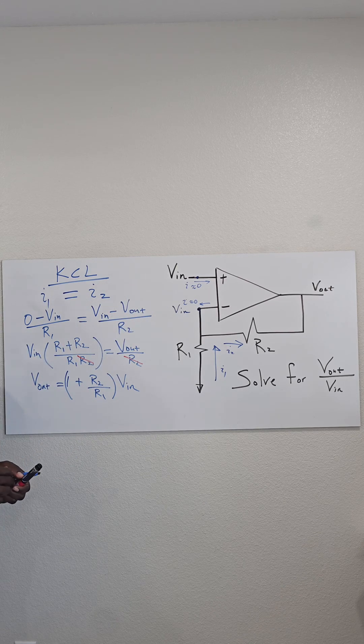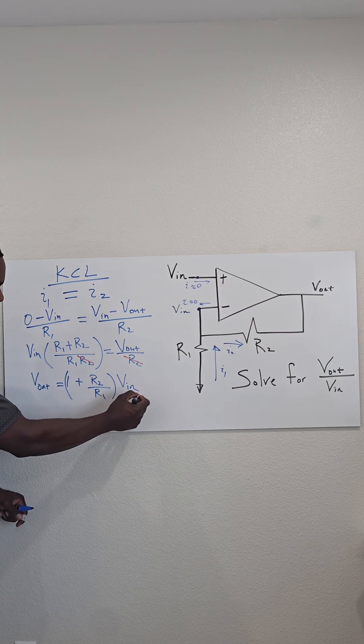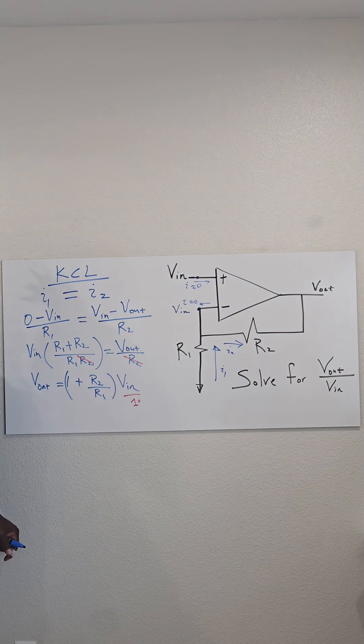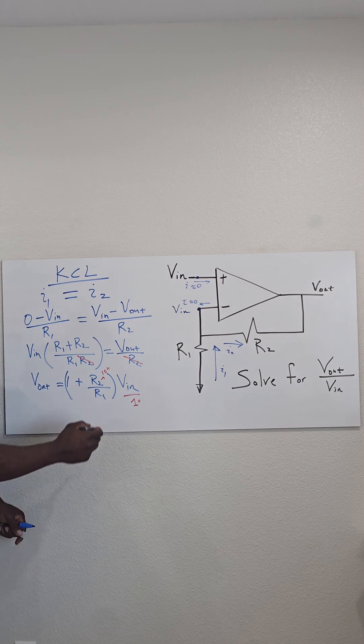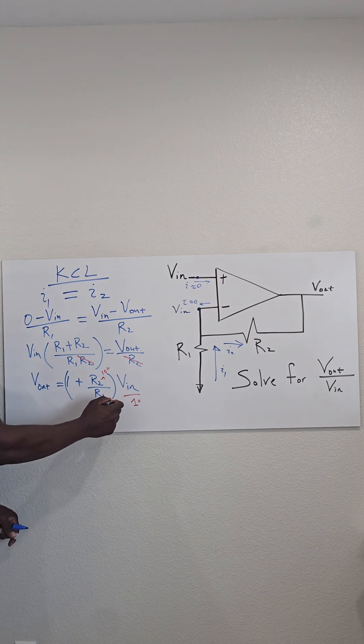And what is it saying, essentially? It's saying that if you give me a Vin of 1 volt, an R2 of 10k ohms, and an R1 of 10k ohms,